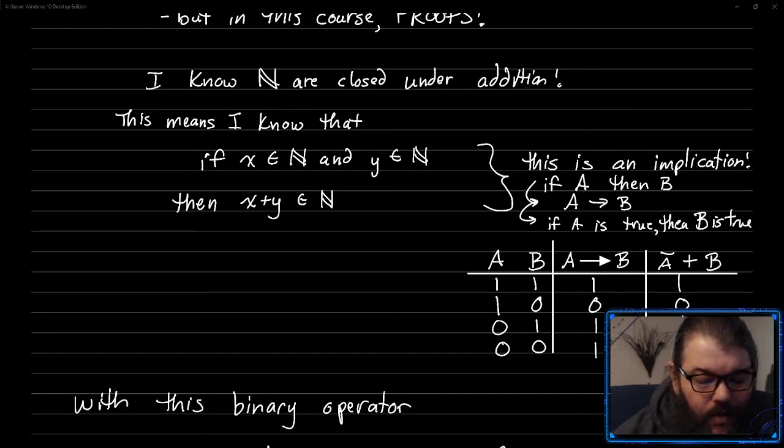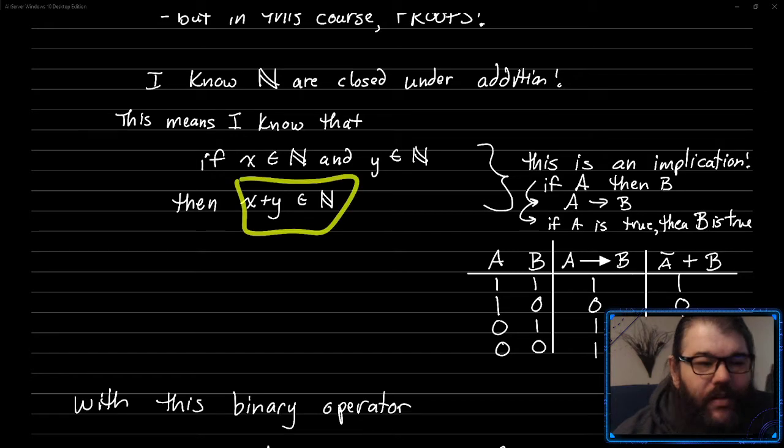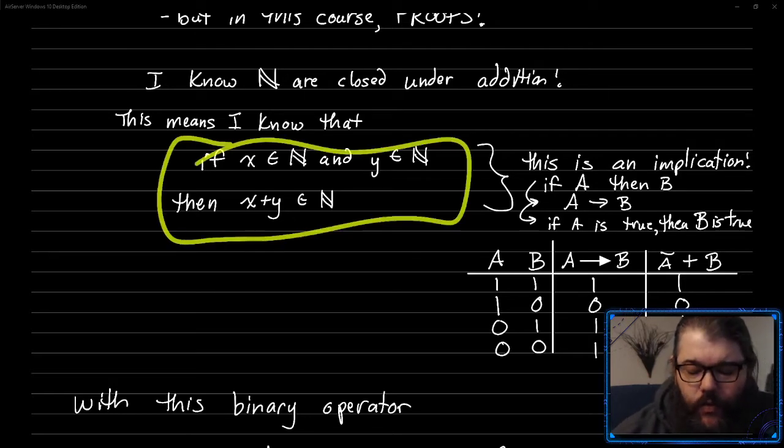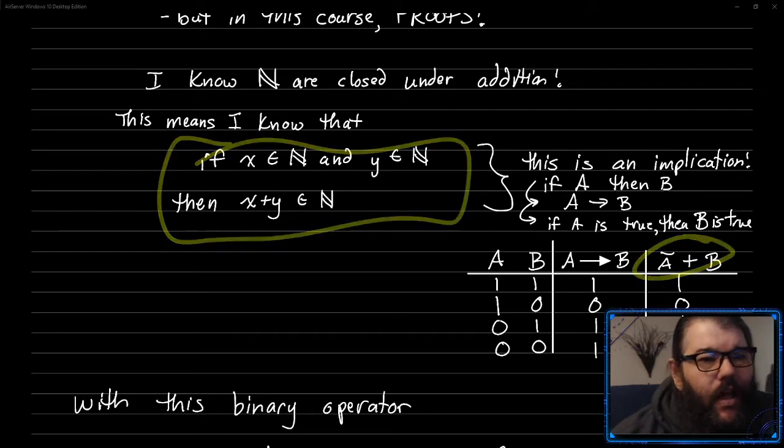So that means either this isn't true or this is true for any x's and y's, whether they happen to be symbols or natural numbers or whatever. Any x and y, this statement has to be true when we say not a or b.